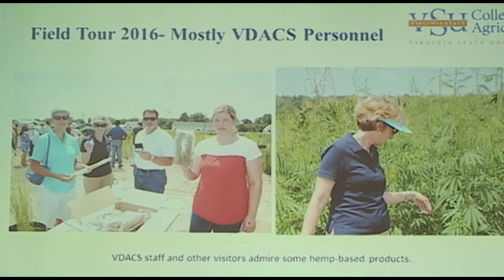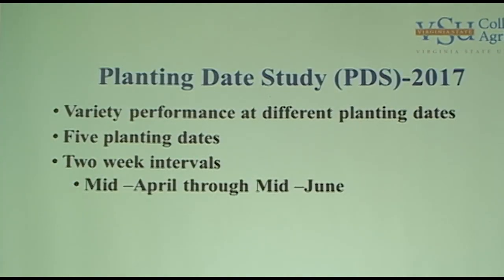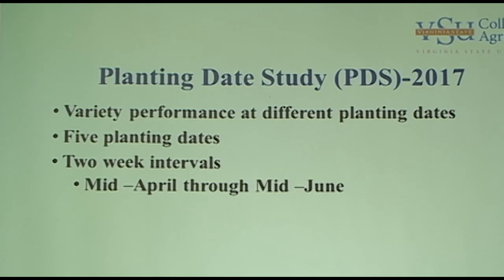There was a group that visited the farm last year — most of them are from the Virginia Department of Agriculture — and they sampled a few products from hemp. Now in 2017, what we should have done in 2016 was compare different varieties, but because the seeds came in late, we did not do that. So this year we had 12 different varieties that we are testing in the field.